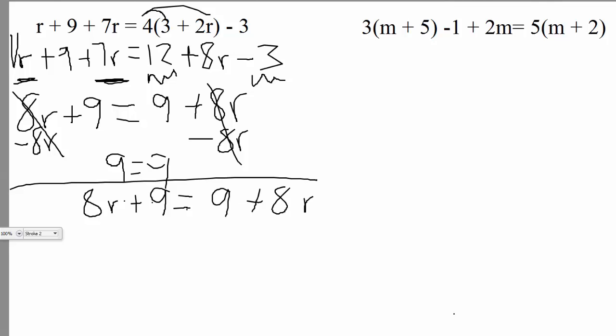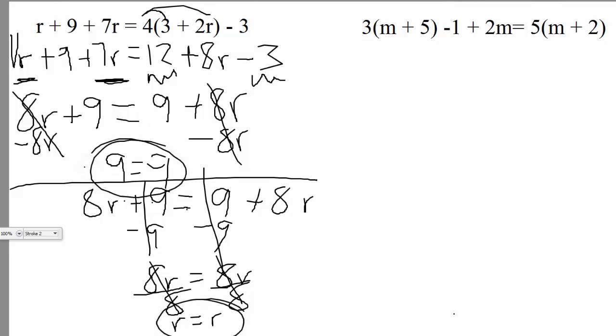Or maybe go a step above and instead of subtracting the 8r, let's try and do something else. What if I got rid of the number first? So what if I subtracted 9 on either side? Well if I do that, 9 minus 9 cancels, 9 minus 9 cancels. I'm left with 8r equals 8r. And if I divide out the coefficient, those cancel as well and we're left with r equals r.